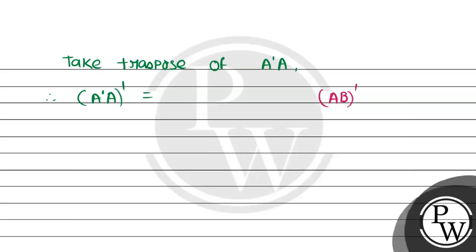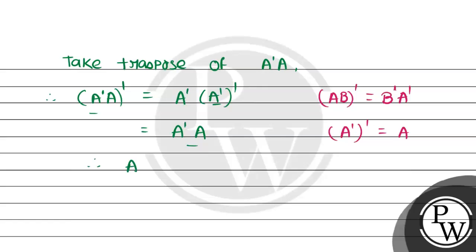Using (AB)' = B'A', we get A' · (A')'. And since the transpose of a transpose equals the original matrix, (A')' = A, so we get A'A. The transpose of A'A equals A'A, so A'A is a symmetric matrix.